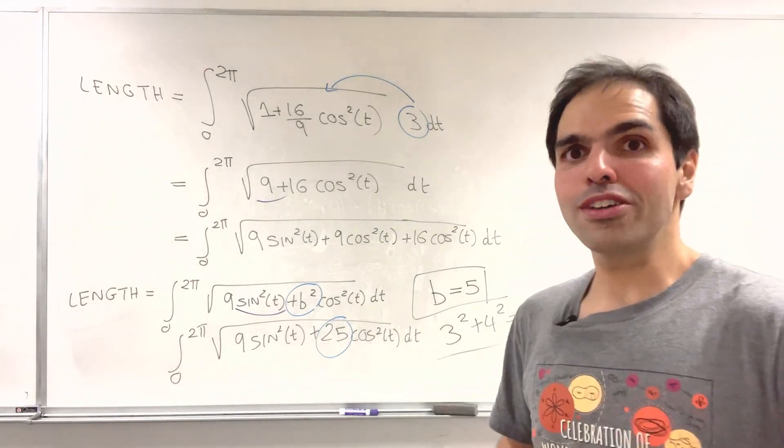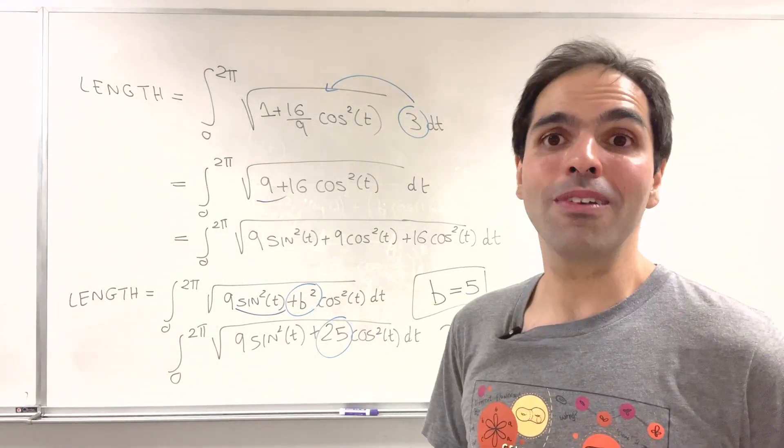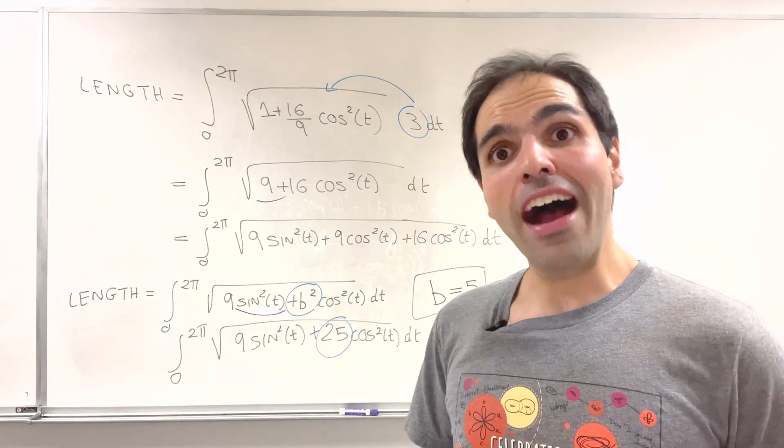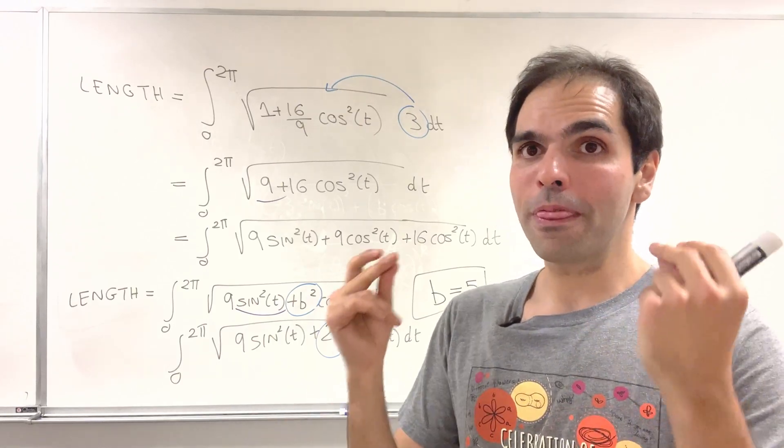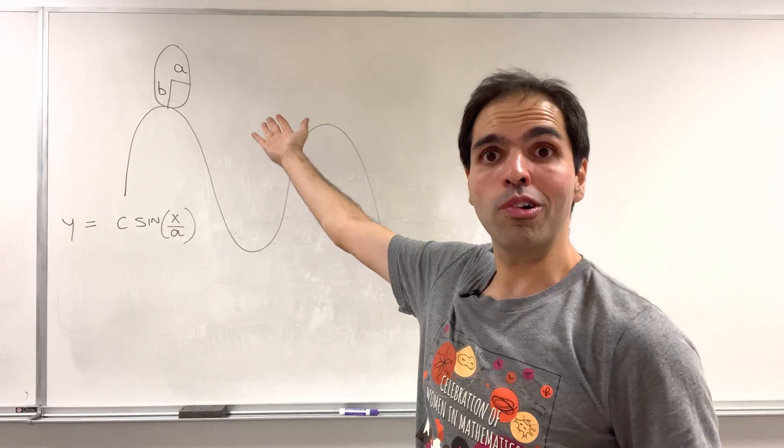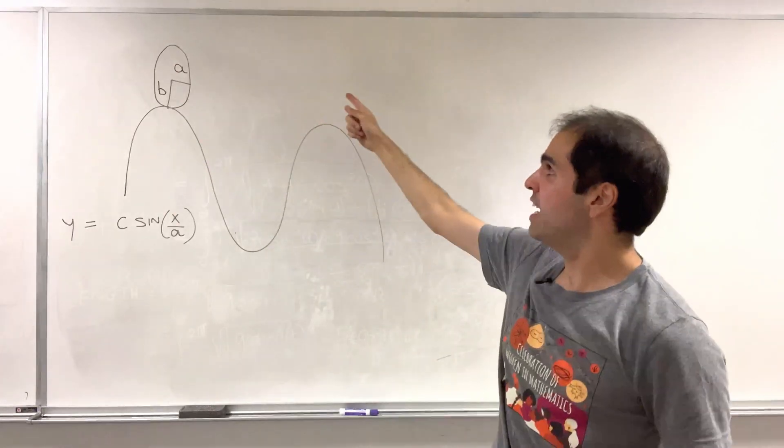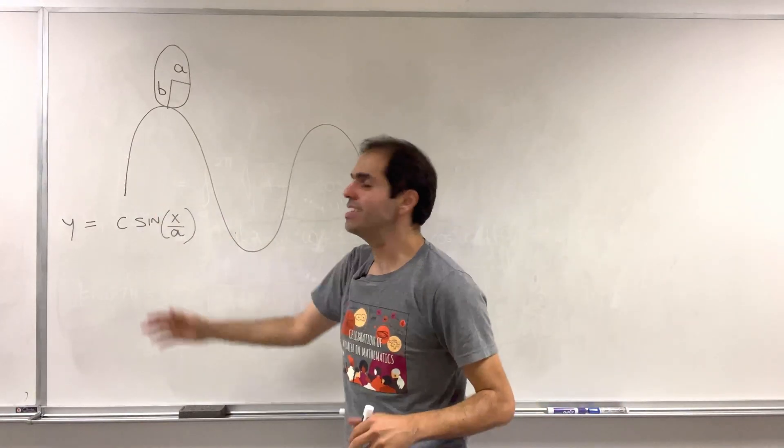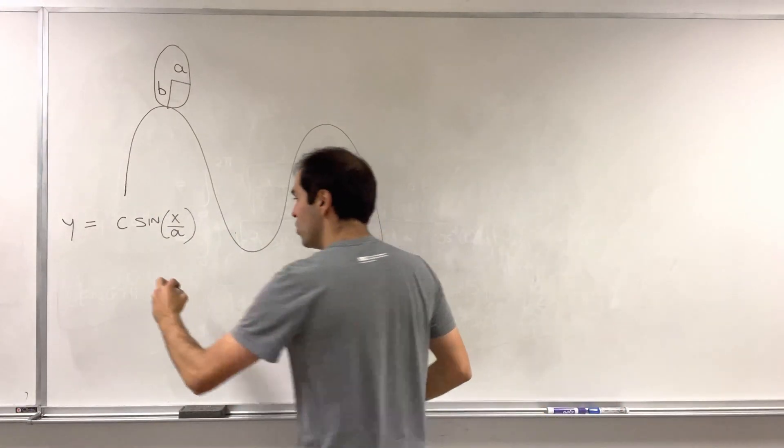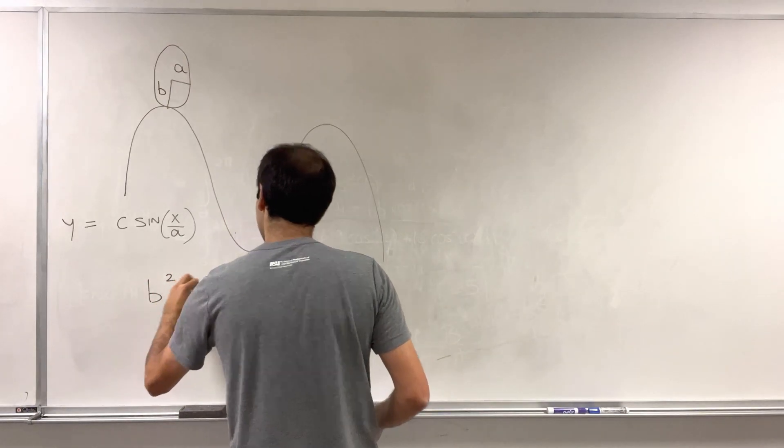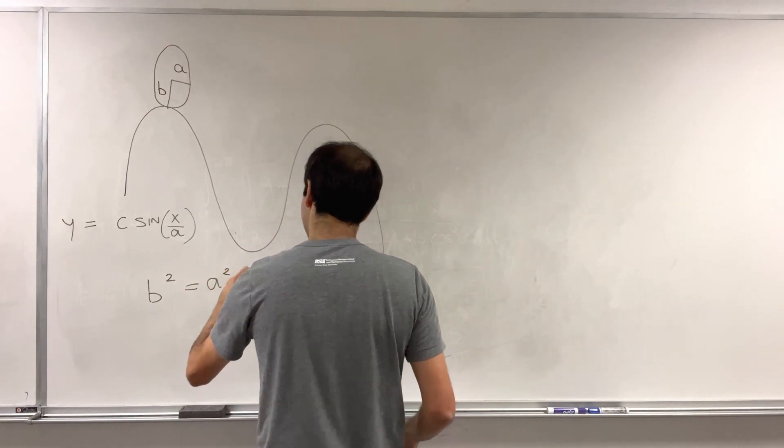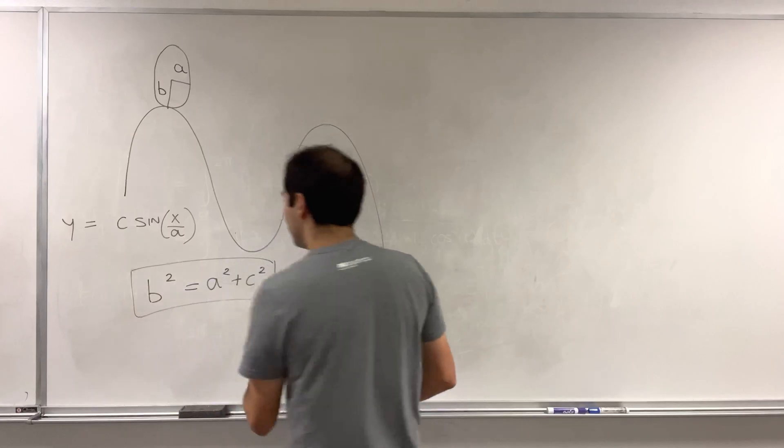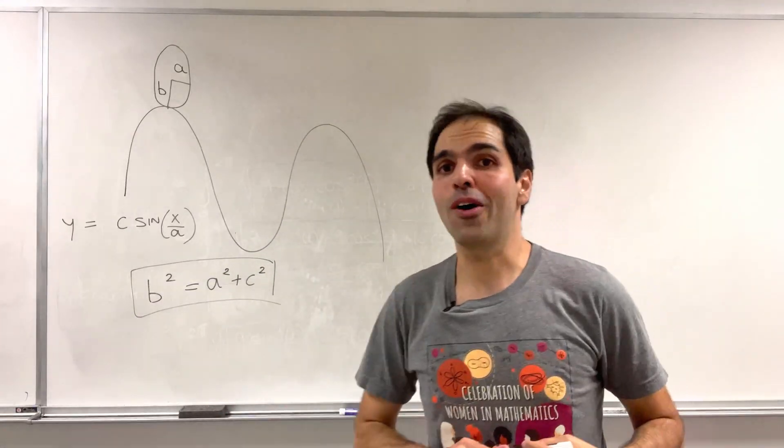So indeed, there's a Pythagorean triplet here going on. And in fact, this is true in general, because if more generally, you have an ellipse with radii a and b that rolls around the curve c sine of x over a, then in fact, we have that b squared equals a squared plus c squared. Using the exact same argument.